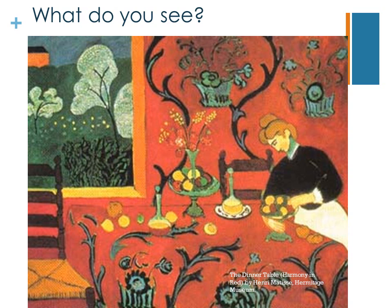When you look at Matisse's painting 'The Dinner Table,' what do you see? Notice how your eye travels around the painting, and that the colors and shapes aren't realistic and the entire canvas is used. If this had been a traditional painting, most likely the fruit bowl in the middle would be your focal point and it would be much larger than the rest of the piece.